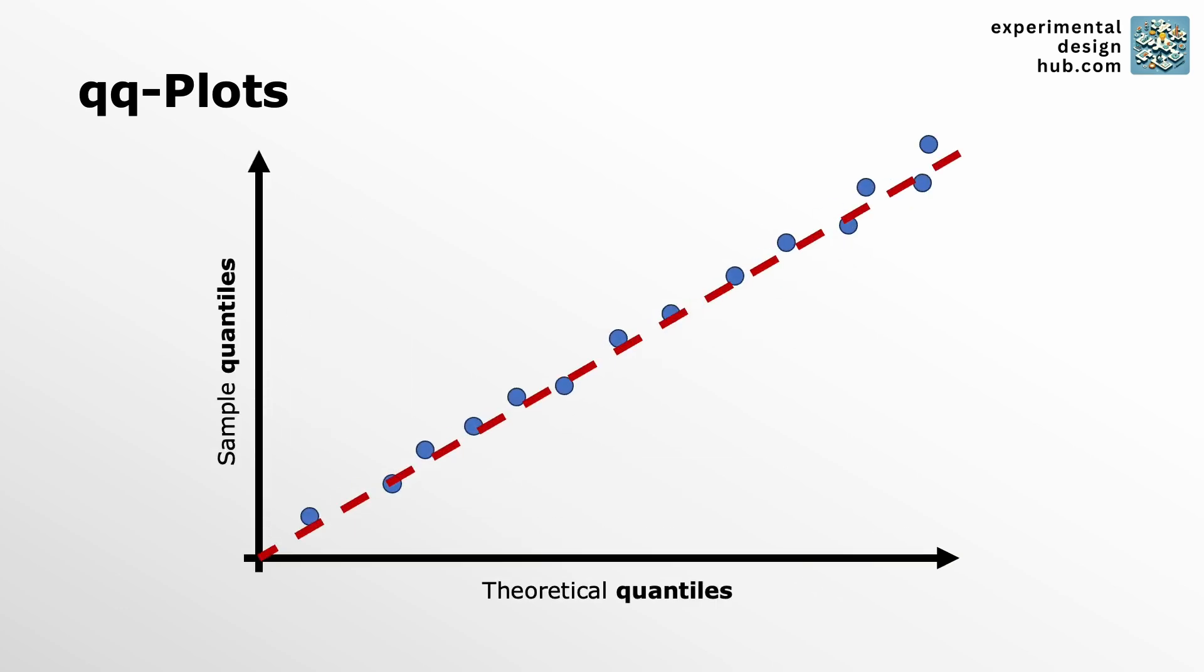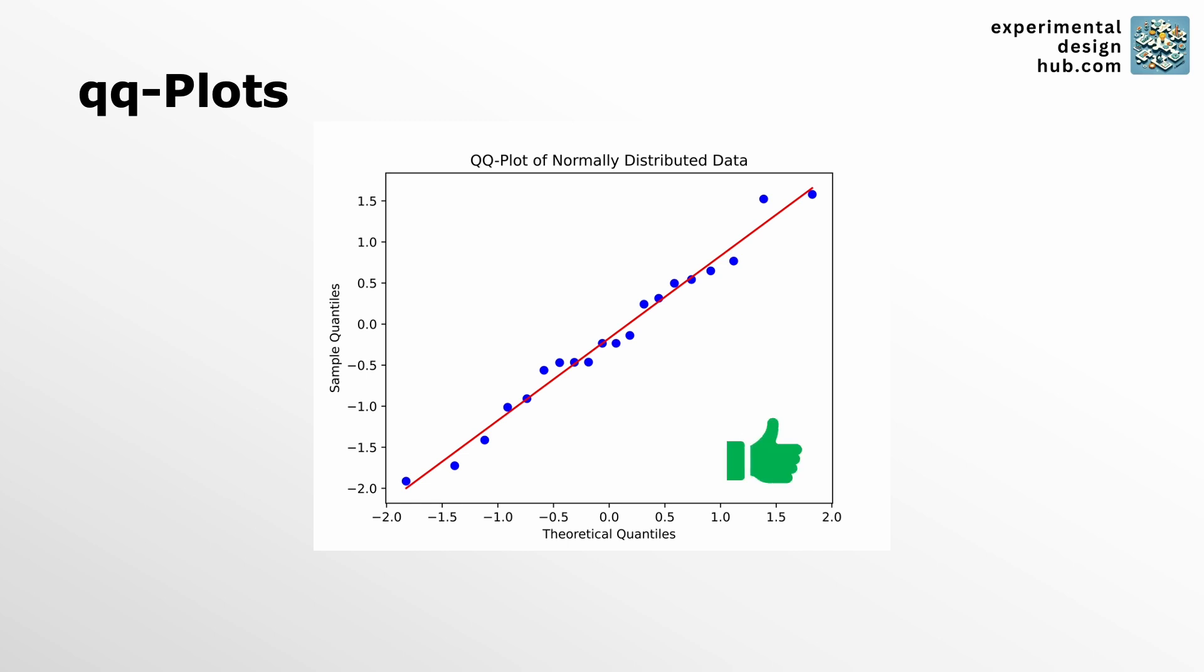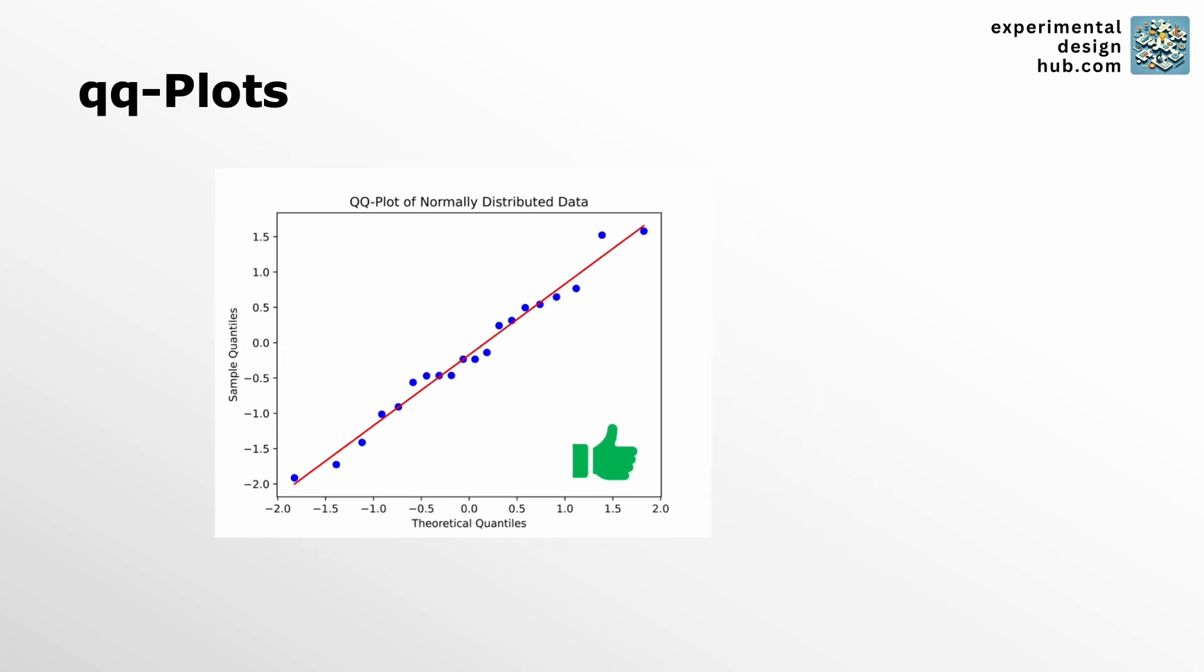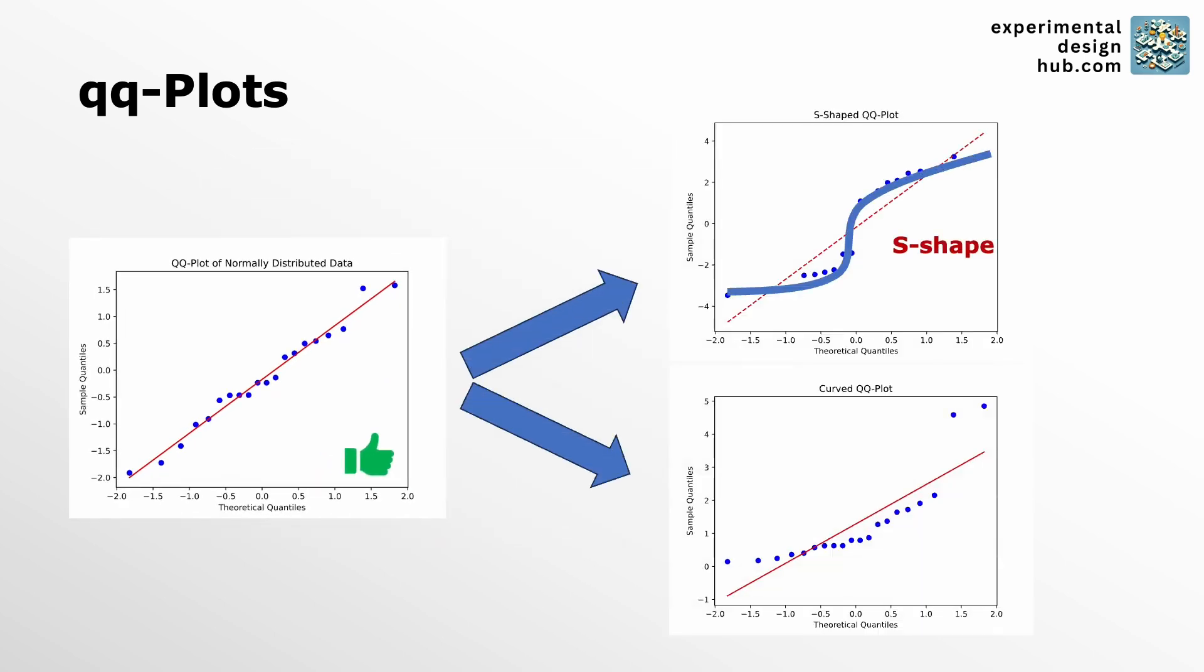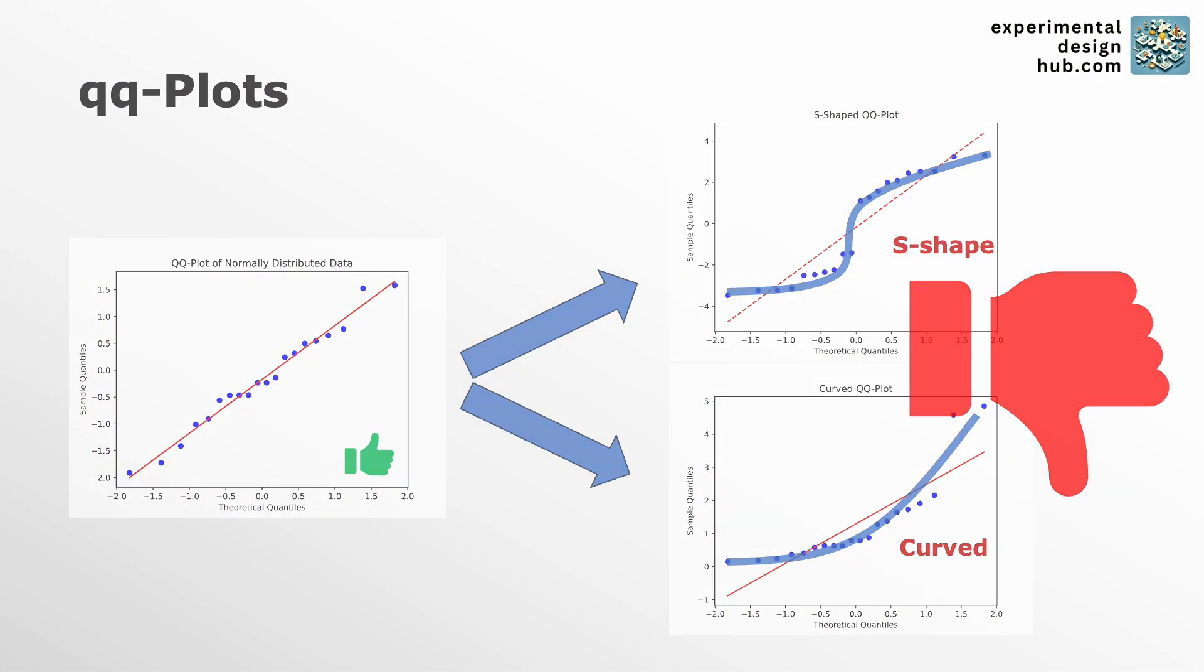Now the ideal case for a QQ plot is a straight line at a 45 degree angle. But in practice it's completely fine if there's some deviation from that line. Just certain trends like S-shape or curves are bad. So what can you do when your data shows a trend like an S-shape or a curve in the QQ plot instead of a straight line?